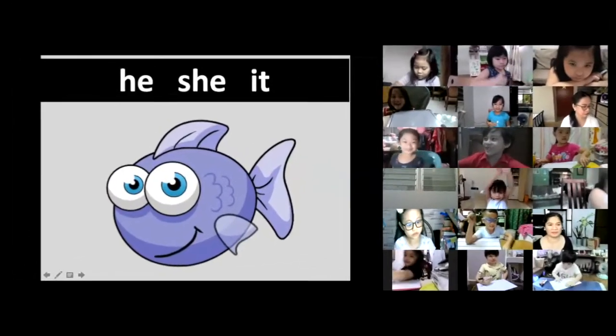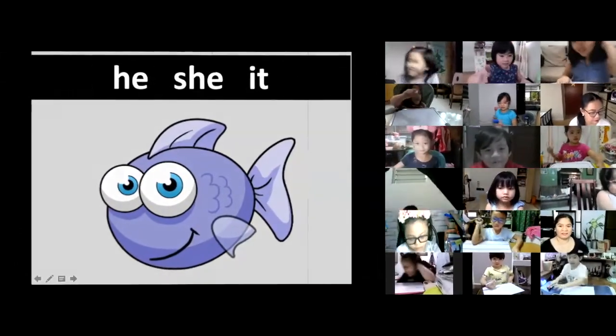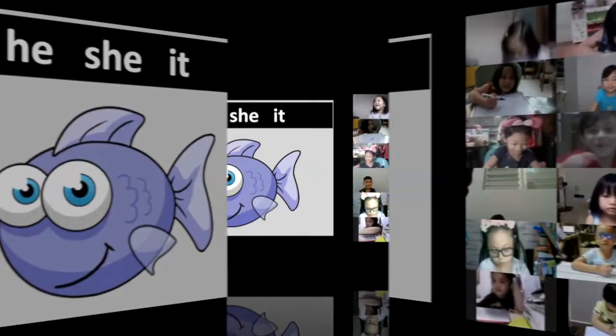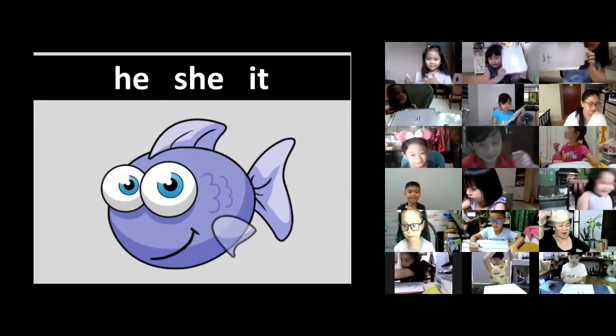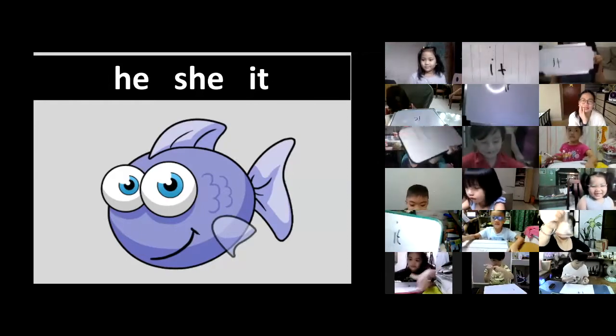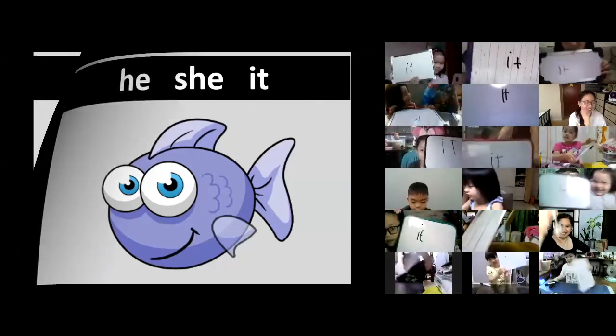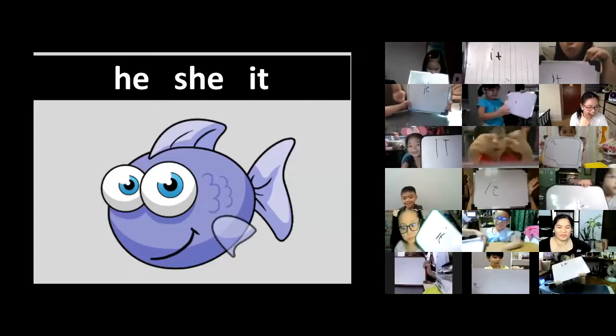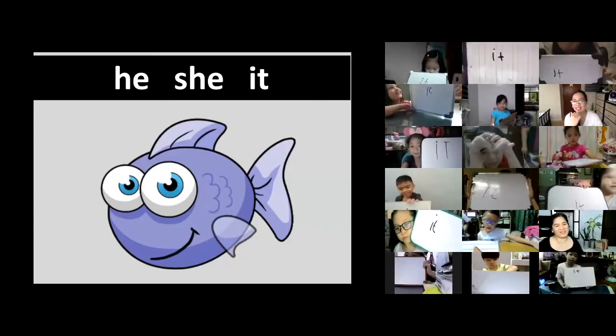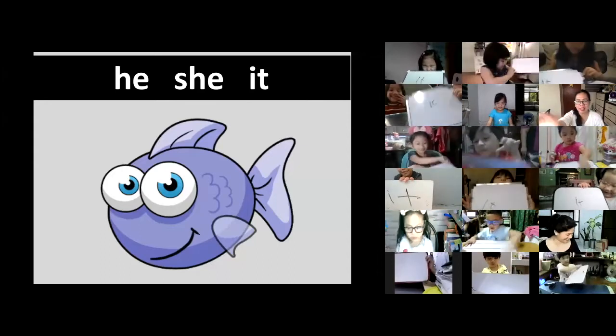Picture number three. Ten, nine, eight, seven, two, one. Okay, all right. The pronoun for the fish is it. Very good.